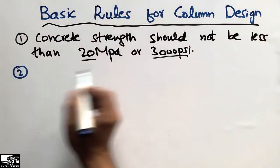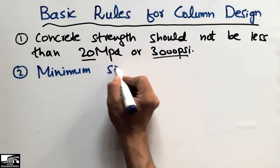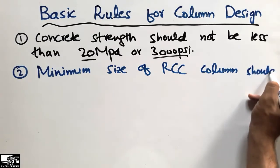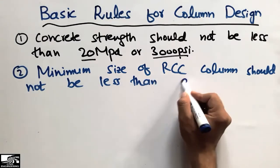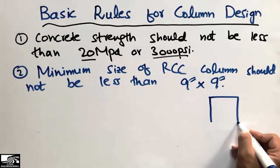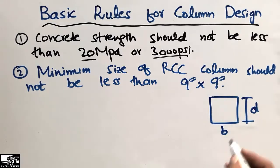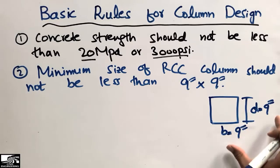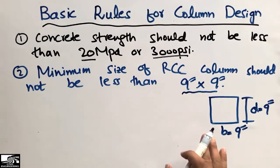The second rule is about the minimum size of the column. The minimum size of an RCC column should not be less than nine inches by nine inches. If this is the cross-section of the column, with width and depth D, it should at least have dimensions of nine inches by nine inches. We can provide greater than nine inches, but it should not be less than nine inches.